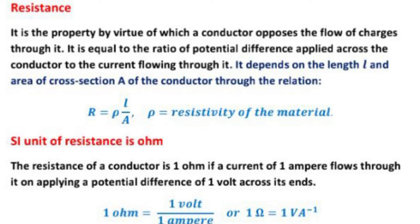Now, resistivity, also called specific resistance. What is specific resistance or resistivity? It is the resistance offered by a unit cube of material of a conductor. Rho equals R times A upon L. Specific resistance depends upon the nature of the material and physical conditions like temperature and pressure.